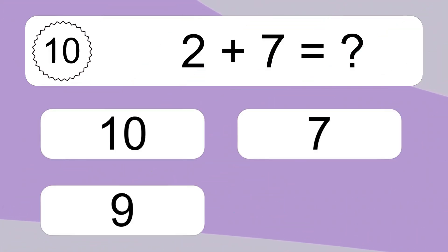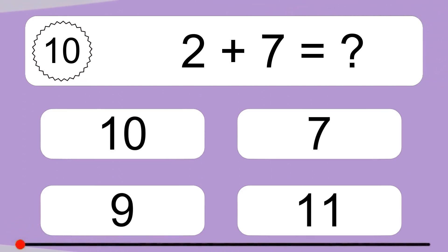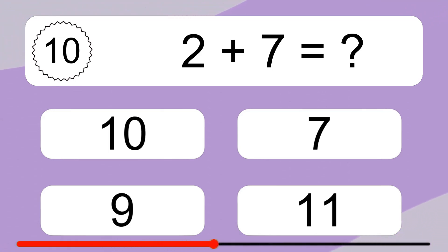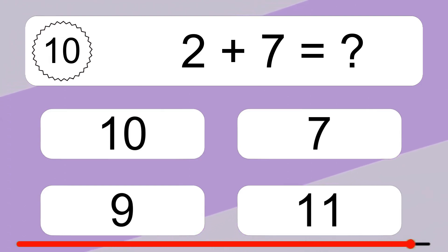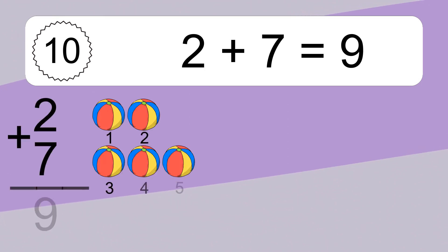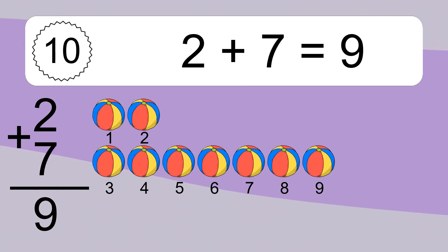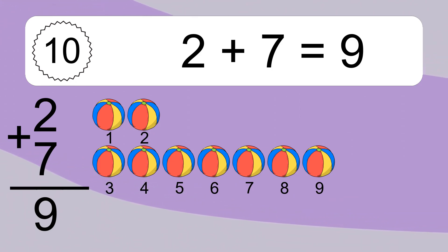2 plus 7 equals what? 1, 2, 3, 4, 5, 6, 7, 8, 9. Let's count it. 1, 2, 3, 4, 5, 6, 7, 8, 9.